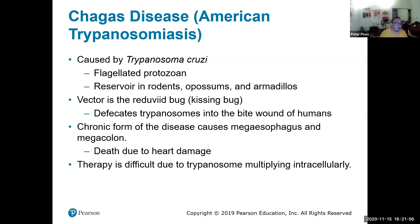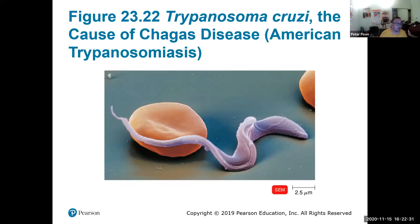Chagas disease is caused by Trypanosoma cruzi. The vector is a bug called the kissing bug, because it tends to bite near your lips. The parasite replicates inside the bloodstream.